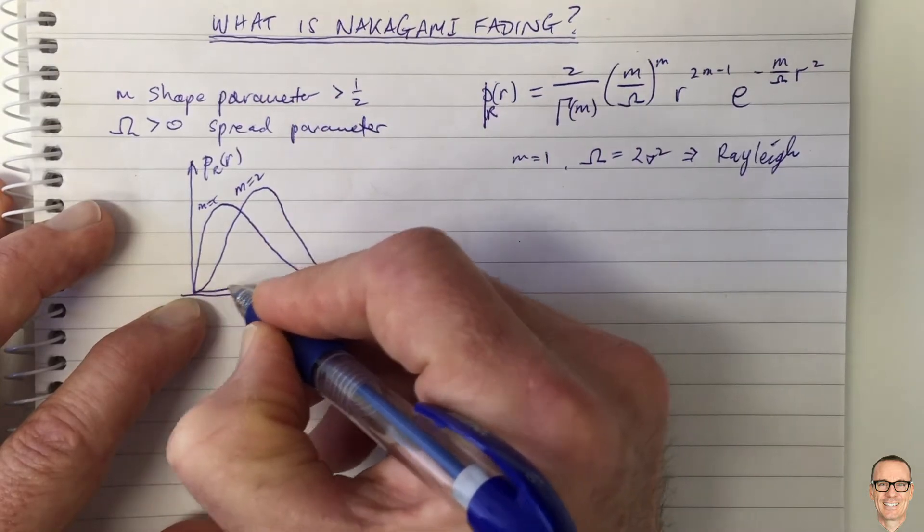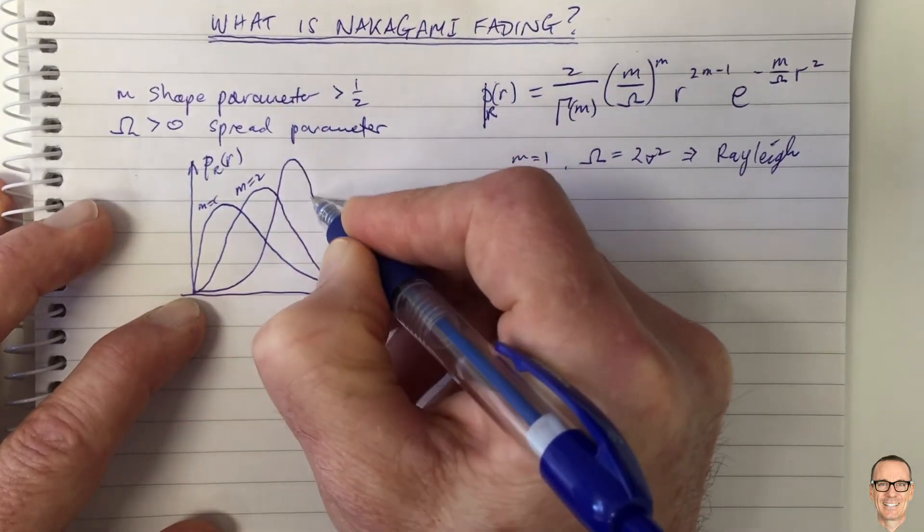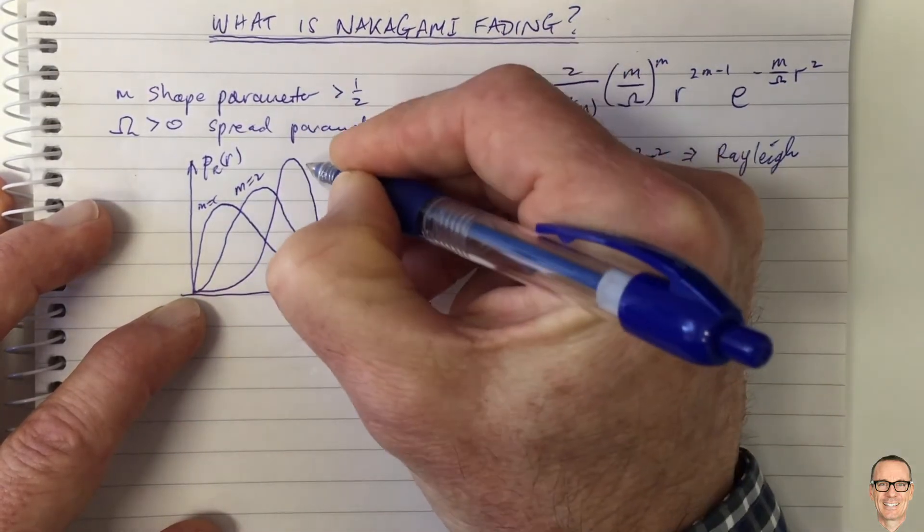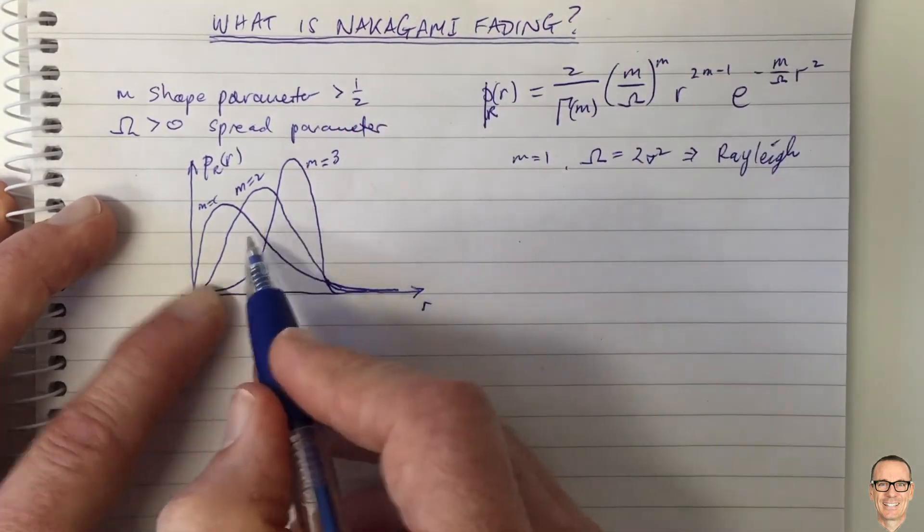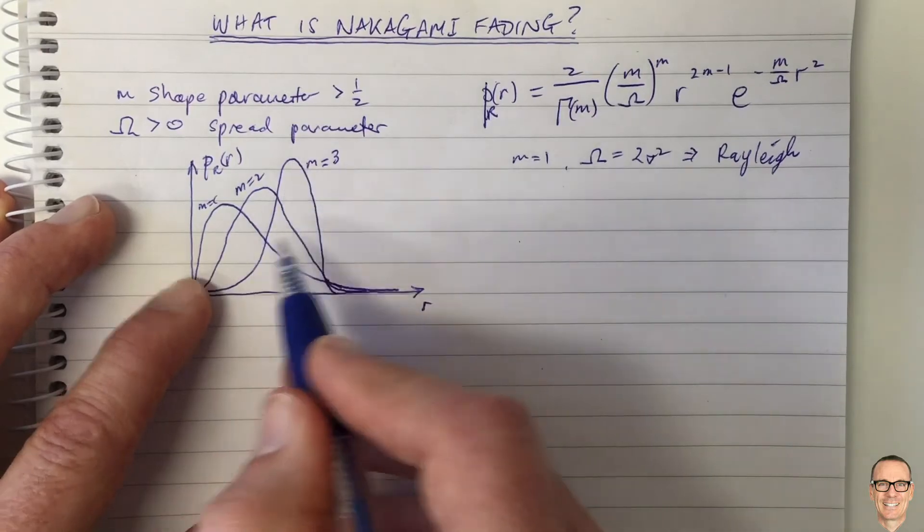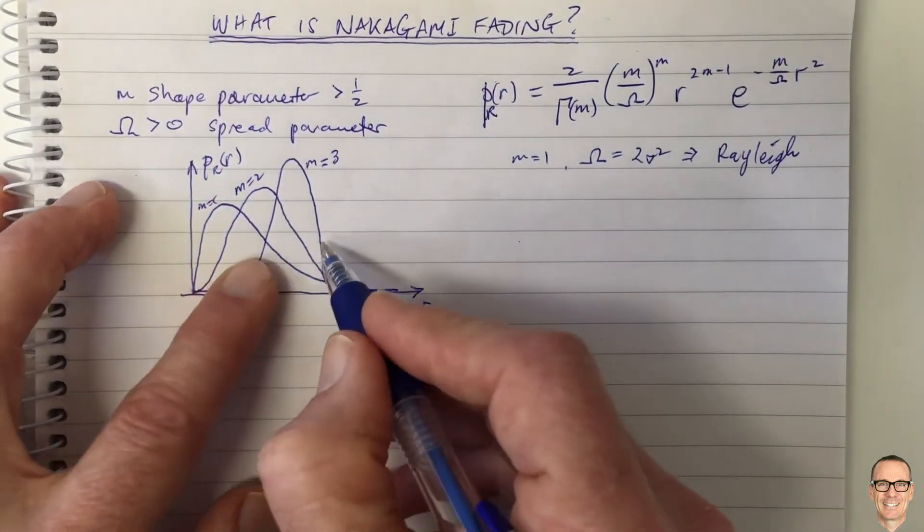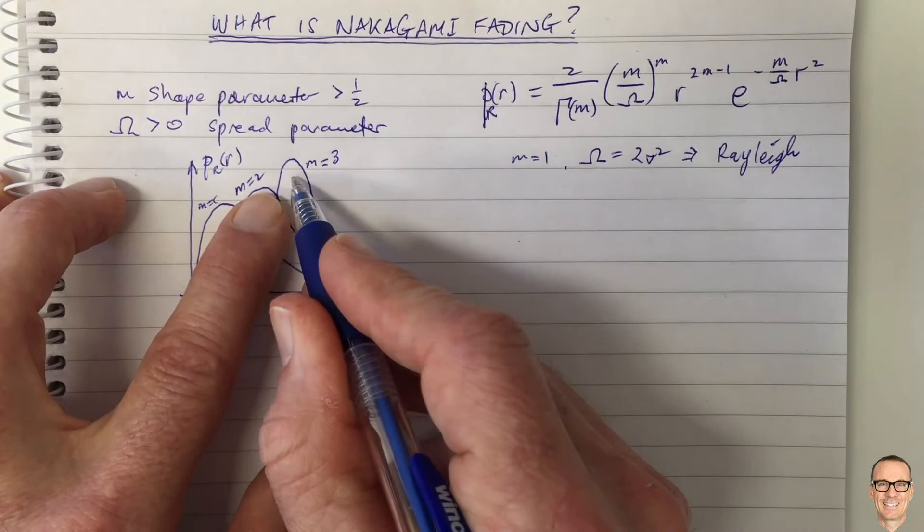So this is what the Nakagami looks like. Just sketching it here, as you increase the M parameter, the height gets higher and it shifts to the right, and the width gets narrower.